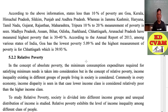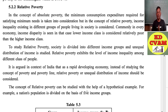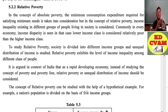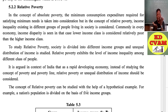Now let us understand relative poverty, also called comparative poverty. For example, suppose A earns 10,000, B earns 15,000, and C earns 2,00,000. Compared to B, A is the poorest. Compared to C, B is poor because B earns less. So compared to C, both A and B are poor. This is called relative or comparative poverty. Absolute poverty is called complete poverty, while relative poverty is called comparative poverty.